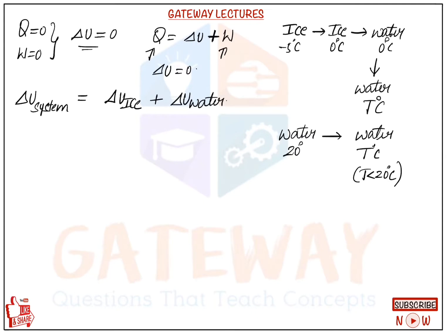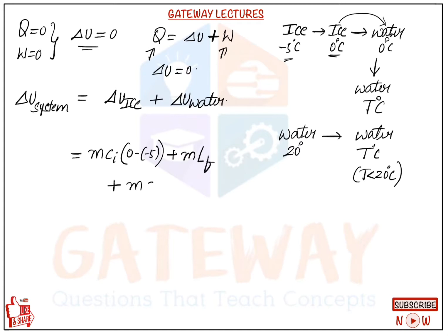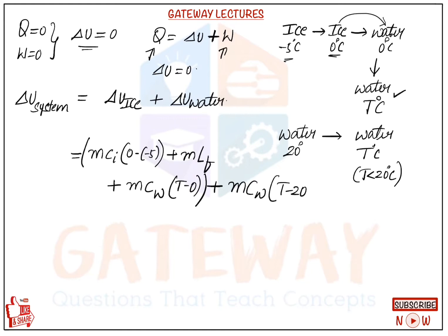For ΔU of ice: mass of ice × specific heat of ice × (0 − (−5)) + mass of ice × latent heat of fusion + mass of ice × specific heat of water × (T − 0). For ΔU of water: mass of water × specific heat of water × (T − 20). The total ΔU of the system equals ΔU_ice + ΔU_water.